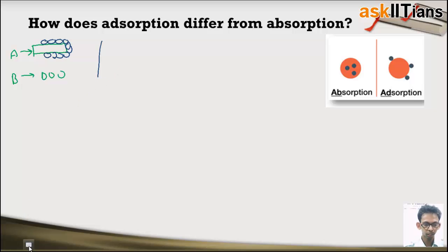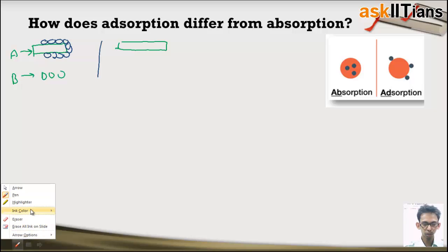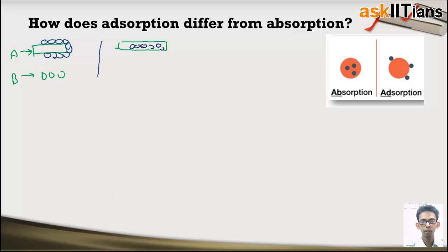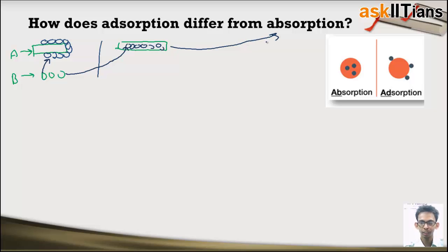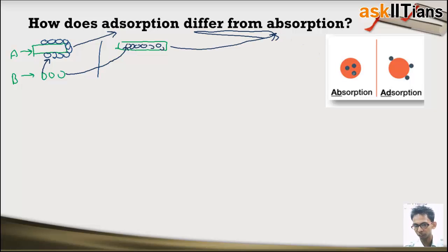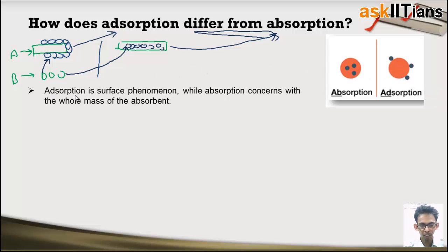The second case is when molecules of B are present not only on the surface but mainly in the bulk — inside the substance. In that case, this is known as absorption. The molecules penetrate the surface membrane and enter the bulk. So: if molecules are attracted only on the surface, it is adsorption; if the molecules are present in the bulk, it is absorption — as you can also see from the image.